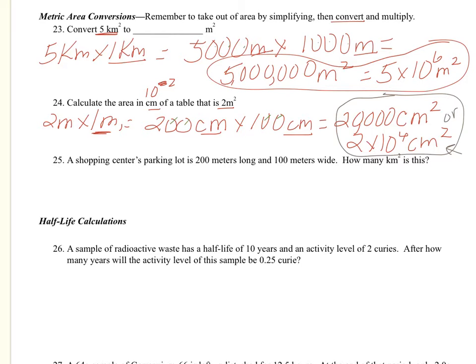25, a shopping center's parking lot is 200 meters long and 100 meters wide. How many kilometers squared is this? So we've got to change it to kilometers first. So it tells us that we have 200 meters times 100 meters.